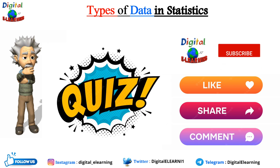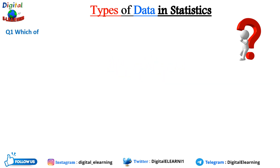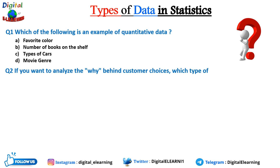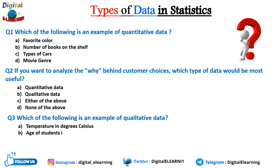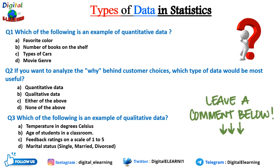Now it's quiz time! Read the questions carefully and leave your answers in the comment section below. Question 1: Which of the following is an example of quantitative data — favorite color, number of books on the shelf, types of car, or movie channel? Question 2: If you want to analyze the sentiment behind customer feedback, which type of data would be most useful — quantitative data, qualitative data, either of the above, or none of the above? Question 3: Which of the following is an example of qualitative data — temperature in degrees Celsius, age of students in the classroom, feedback rating on a scale of one to five, or marital status like single, married, or divorced?